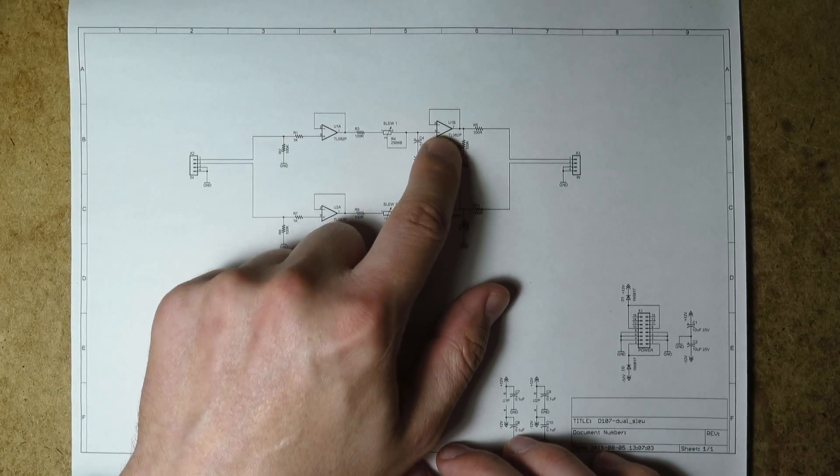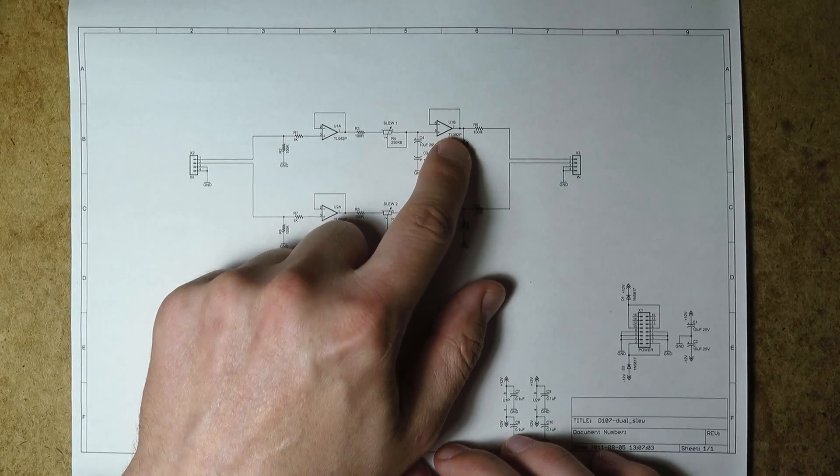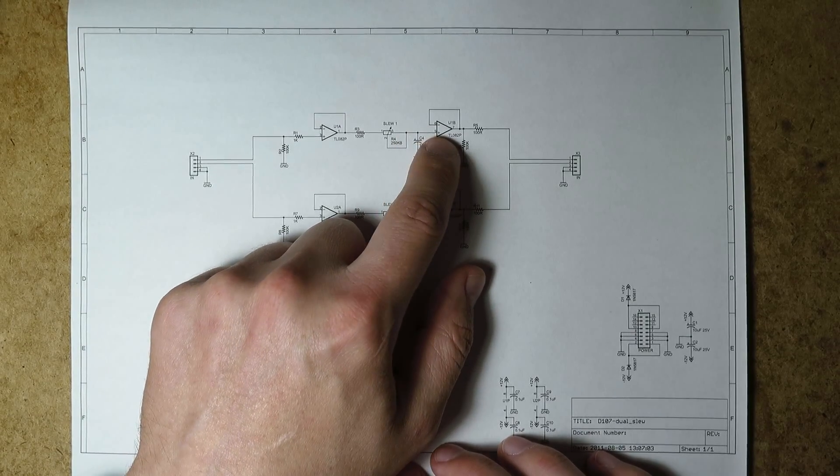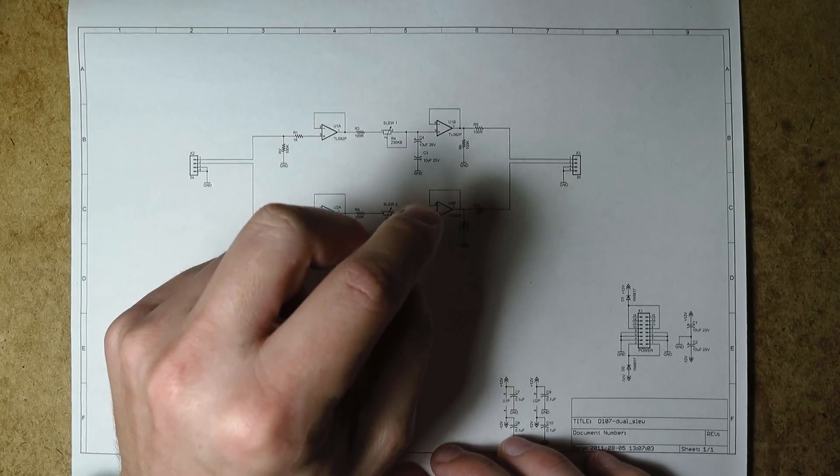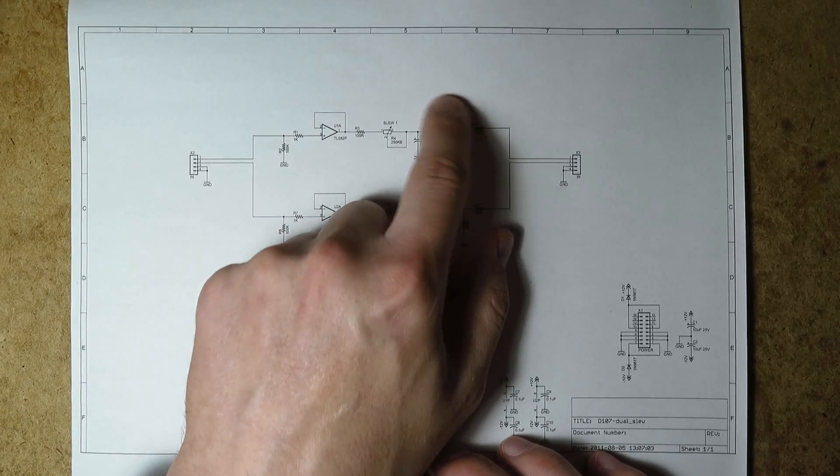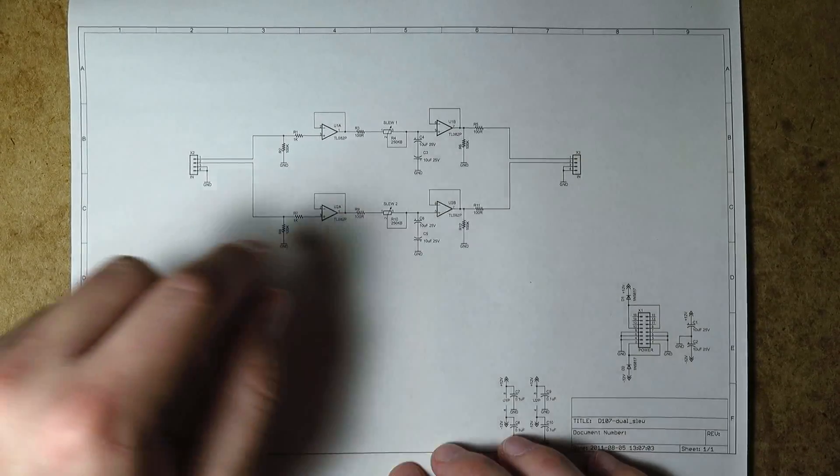And notice it's connected to the also again non-inverting input of a TL082 which is a JFET type. So this draws literally no current, almost literally no current. It's literally gig-ohms of input impedance. And this buffers the signal to produce the actual output.